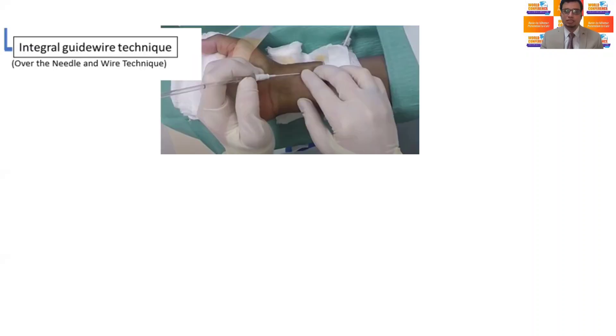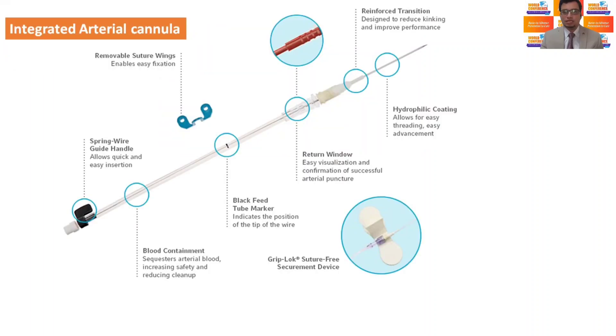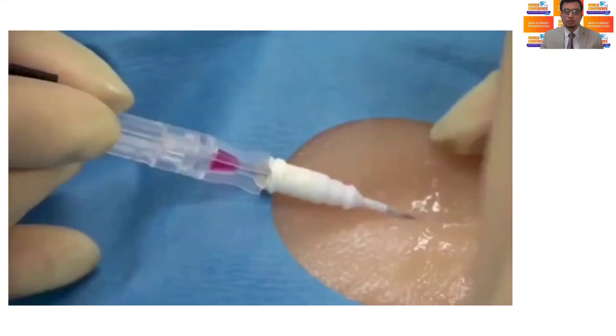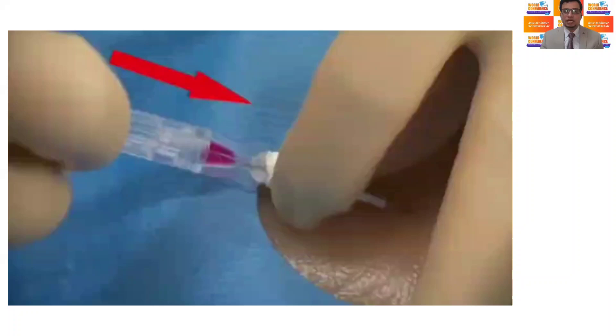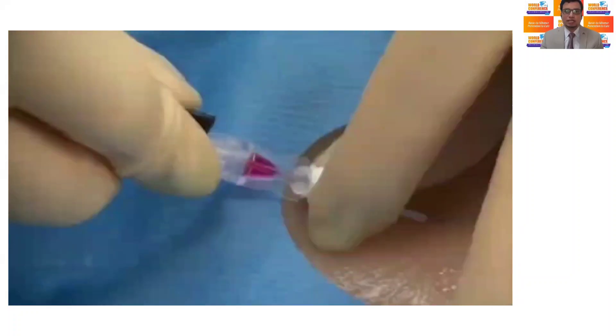A third technique, which is very popular nowadays, is called integral guidewire technique, in which a unique cannula-needle-guidewire assembly is used in which when blood backflow is observed in long hub, the guidewire is advanced freely and then catheter is advanced over the guidewire, associated with much less blood loss compared to previous two techniques.